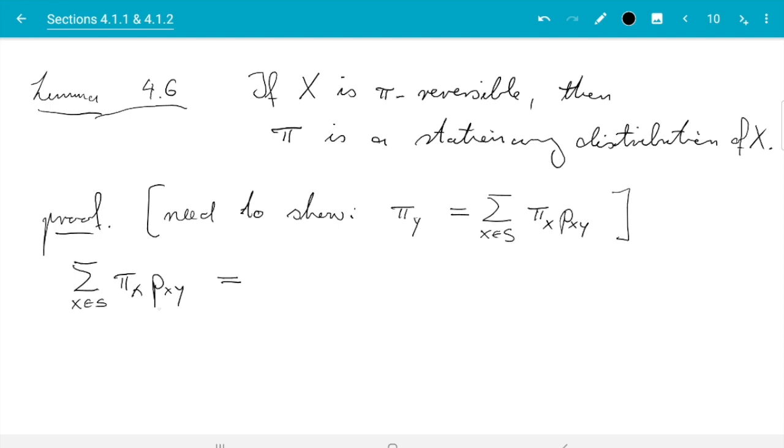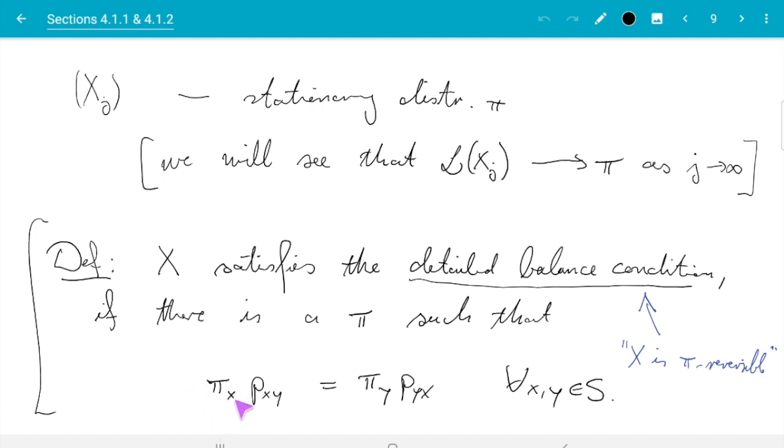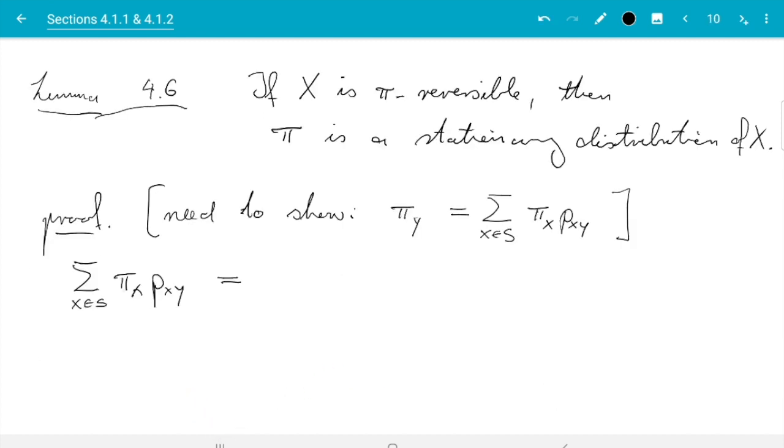We need to show pi_y equals sum over all x pi_x p_xy. So to try that, we start on the right hand side. So we have sum_x in S pi_x p_xy equals something. And the first thing we can do is we can use the detailed balance condition because it says if X is pi reversible, the statement holds. And pi reversible we saw here means pi_x p_xy equals pi_y p_yx.